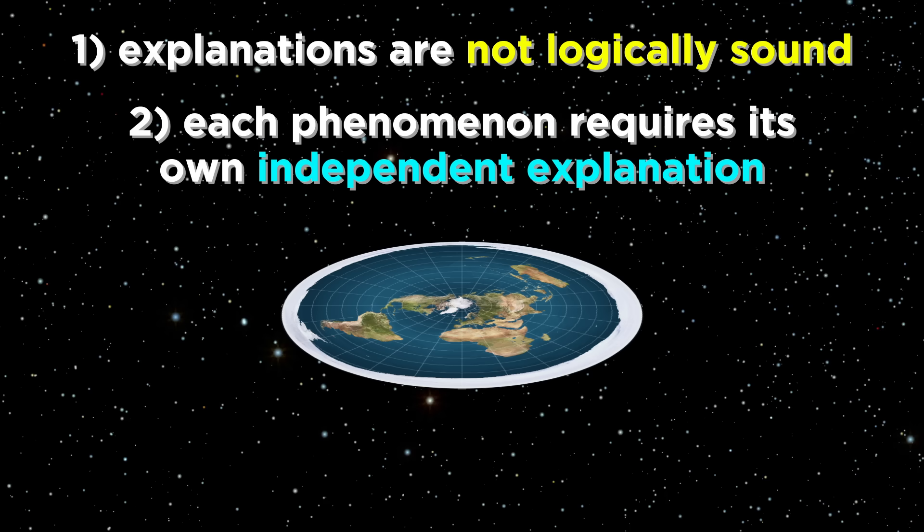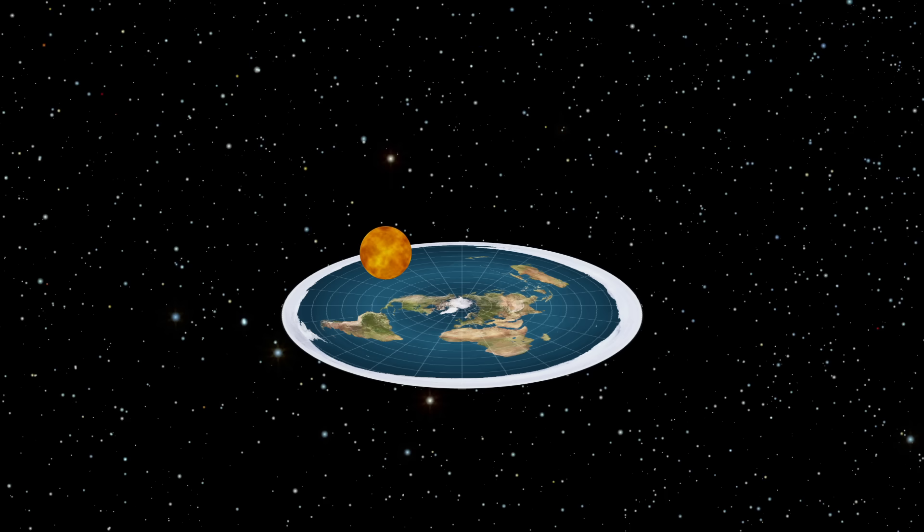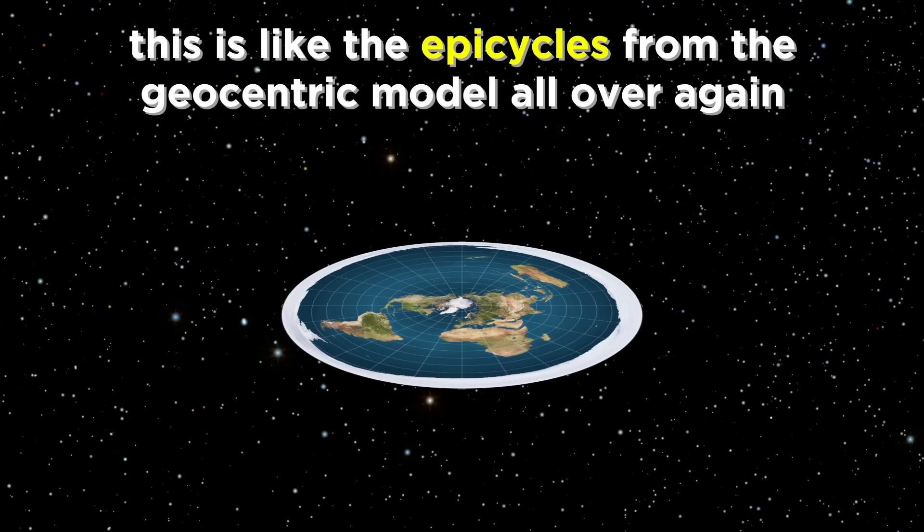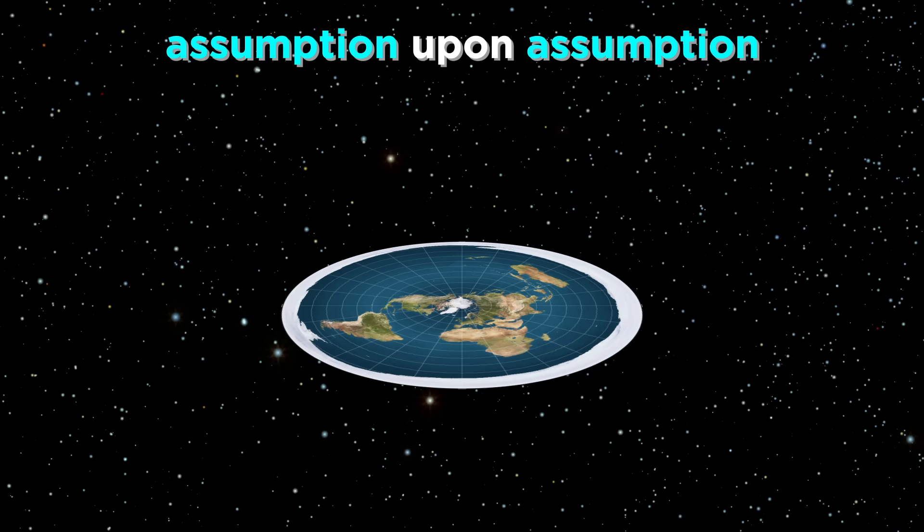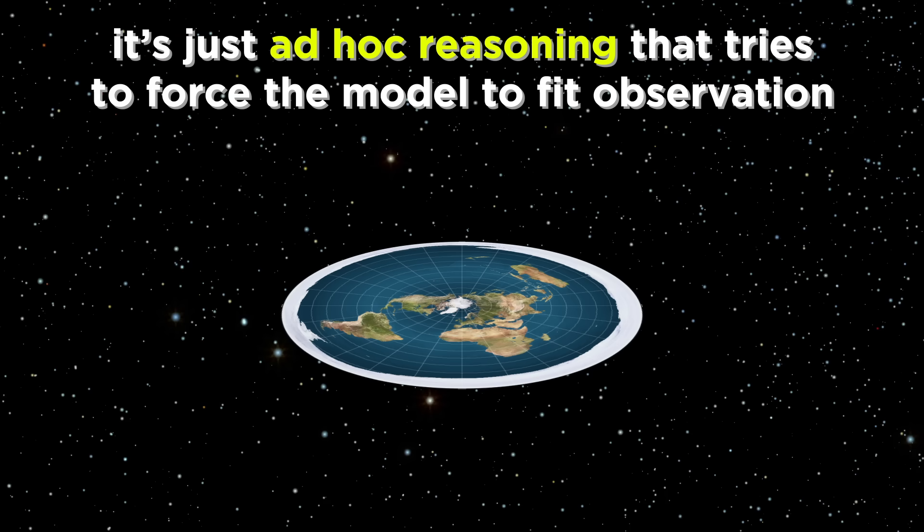but beyond the fact that the explanations are never mathematically or logically sound, the sheer fact that each phenomenon requires its own independent explanation makes it unscientific. If we invent a luminous, sun-like object, and start tracing elaborate paths through the sky, this is just the epicycles from the geocentric model all over again. It's assumption upon assumption, adjustment upon adjustment, all of which are totally ad hoc, based in nothing but an attempt to fit observation. This is very poor science.